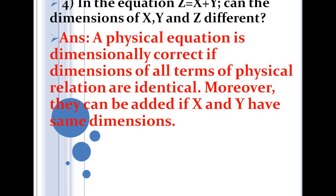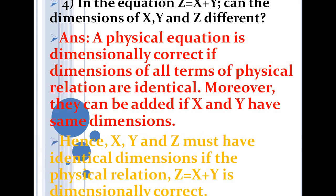One more question: in the equation z = x + y, can the dimensions of x, y, and z be different? For the physical equation to be dimensionally correct, each term must have the same dimension — the dimension on the left side and on the right side must be the same. Since x + y is an addition, they can be added only if they have identical dimensions. So x, y, and z must all have the identical dimension; otherwise the equation is dimensionally wrong.